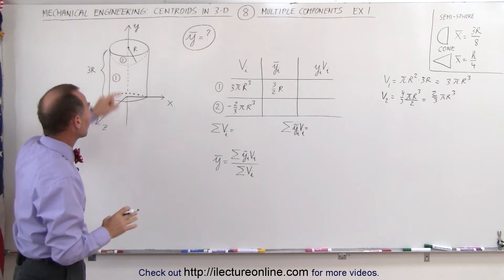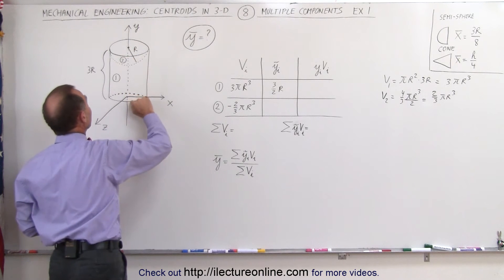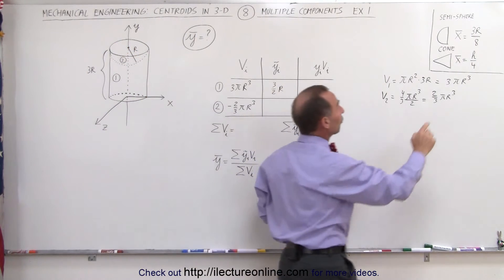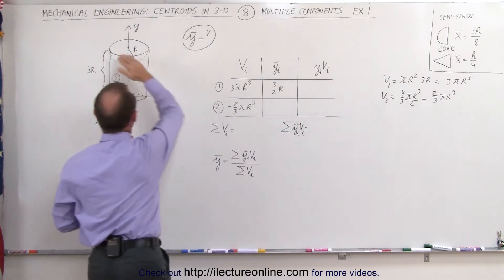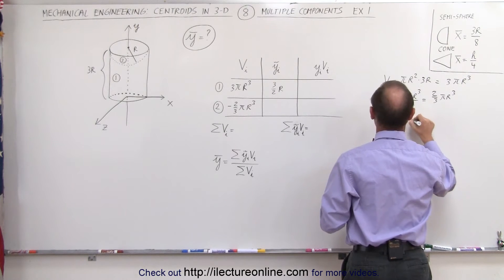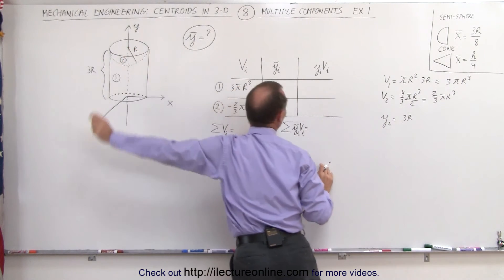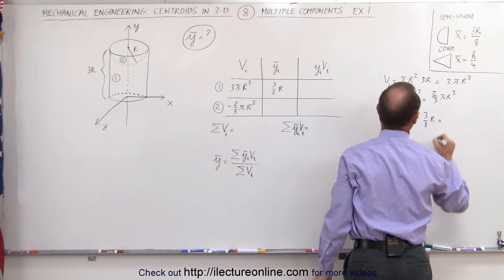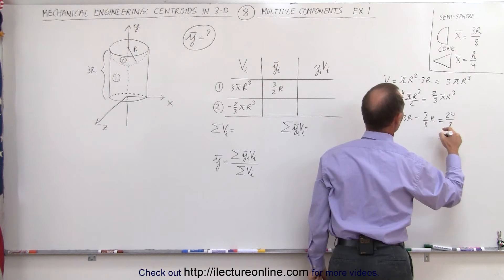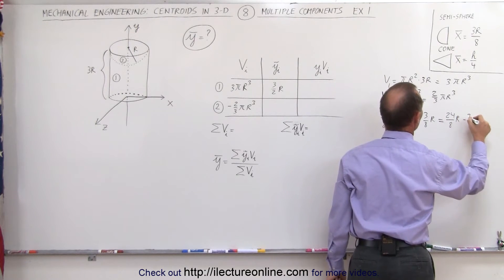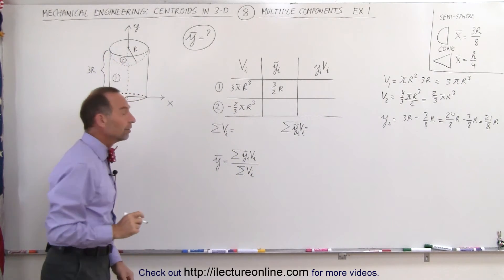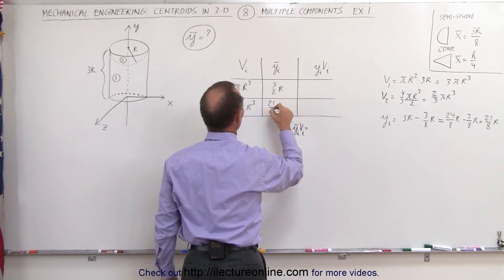Now the centroid for the semisphere: the best way to find that is to go all the way to the top — that would be three r — minus the distance from the flat portion of the semisphere to where the centroid is, according to the common formula, which is three r over eight away from the base. So y sub two equals three r minus three-eighths r. With a common denominator of eight, that's 24 over eight minus three over eight r, which equals twenty-one over eight r — the distance from the origin to the centroid of the semisphere.